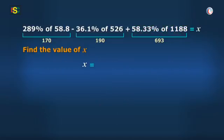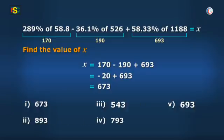So, my final calculation will be 170 minus 190 plus 693 or minus 20 plus 693 or 673 which matches with option number 1. Well done, Sawali. Let's have some more sums.